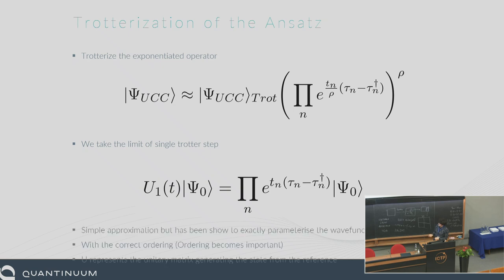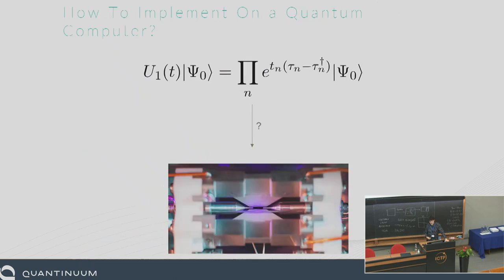How do we get this onto a quantum computer? The ordering can be important here and it can give a better ANSATZ. There was some work by Chan showing that you can actually get the exact wave function if you get the ordering correct. Here's a nice ion trap — I'm not biased, but they are the best.